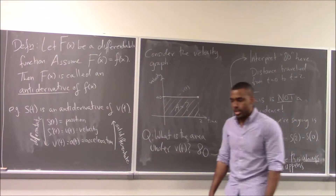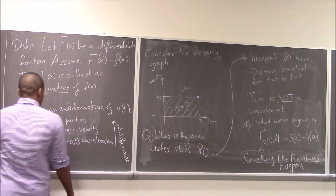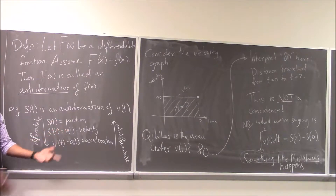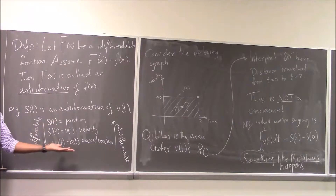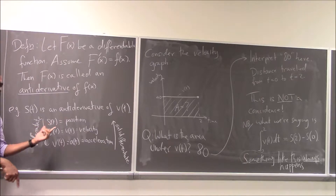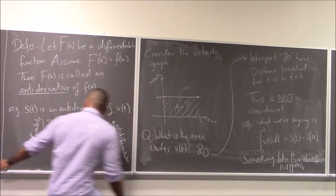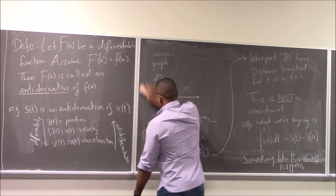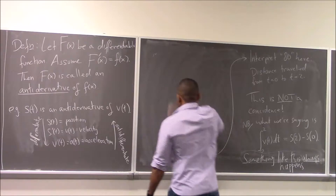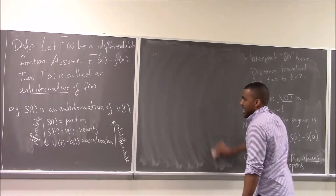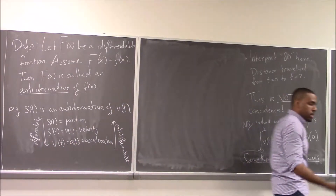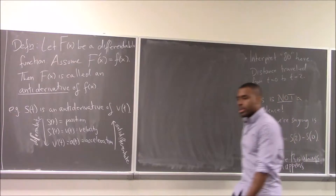There should be some way to reverse the process, and in fact we can do this using formulas. If there's a rule like the power rule to get from one place to another, why couldn't I undo that rule to go back? It turns out you can't always do that, but there are many times where you can. When you can, we say we can find an antiderivative of a function.